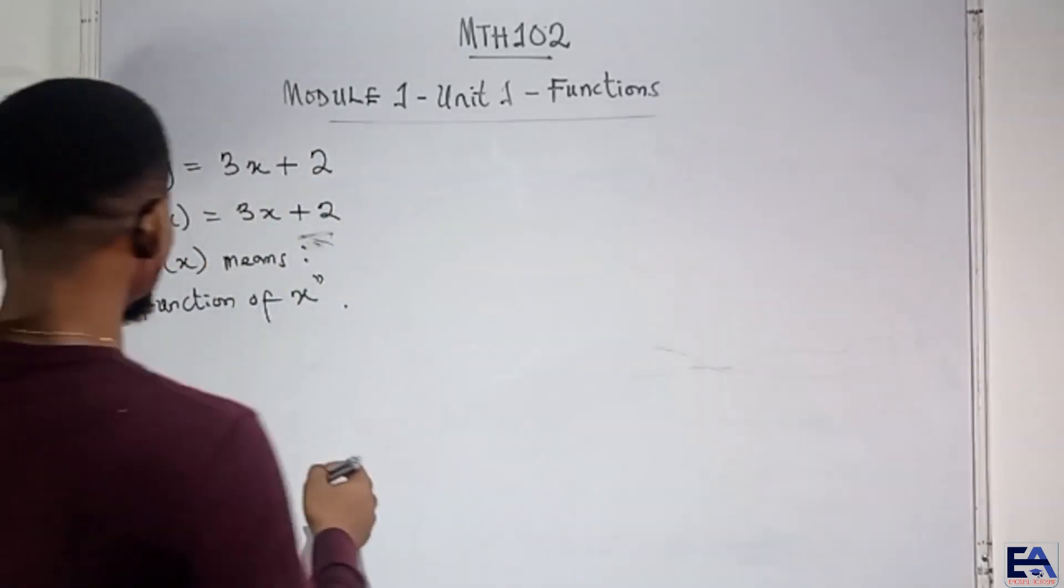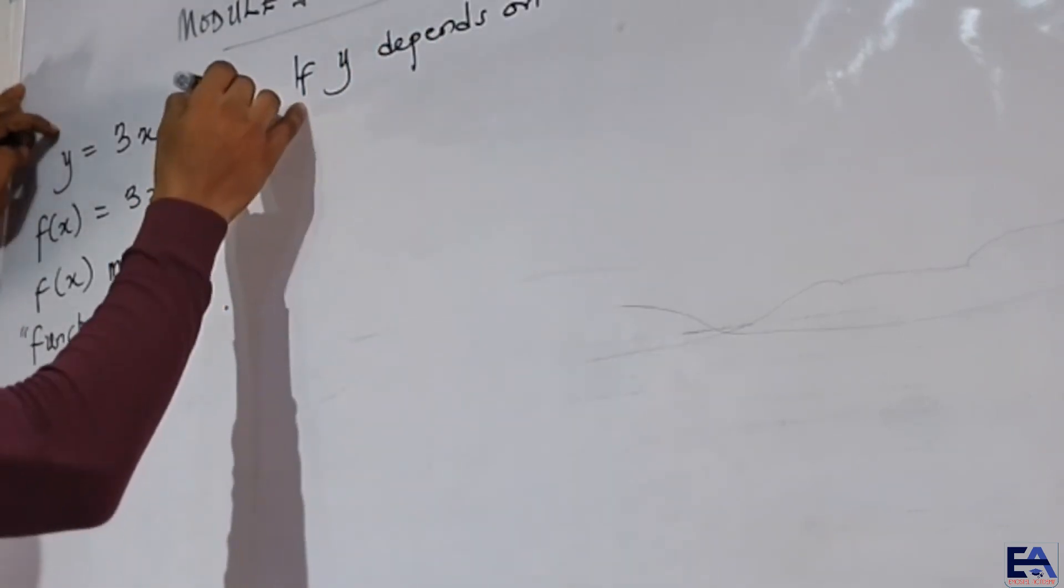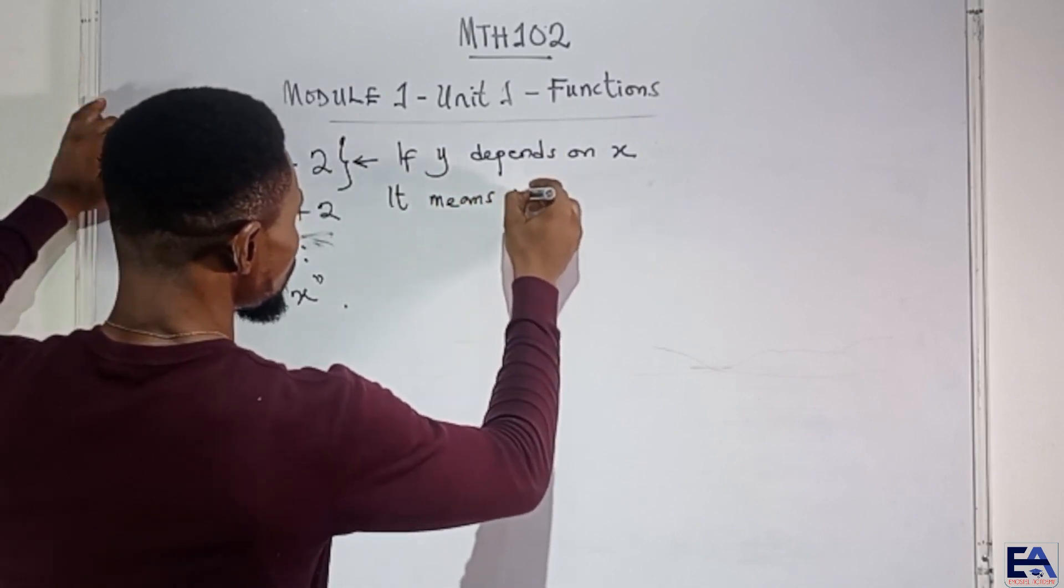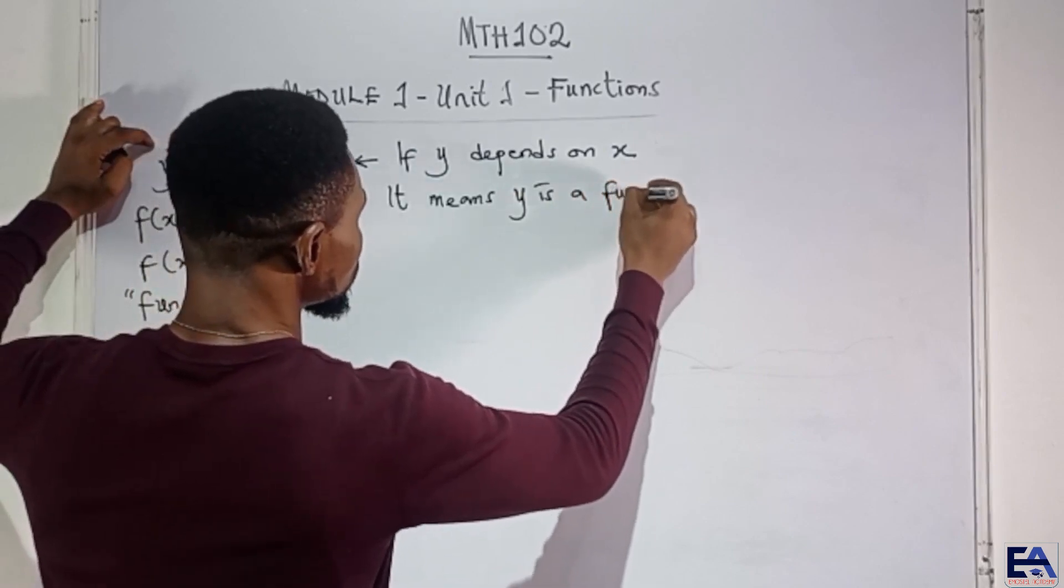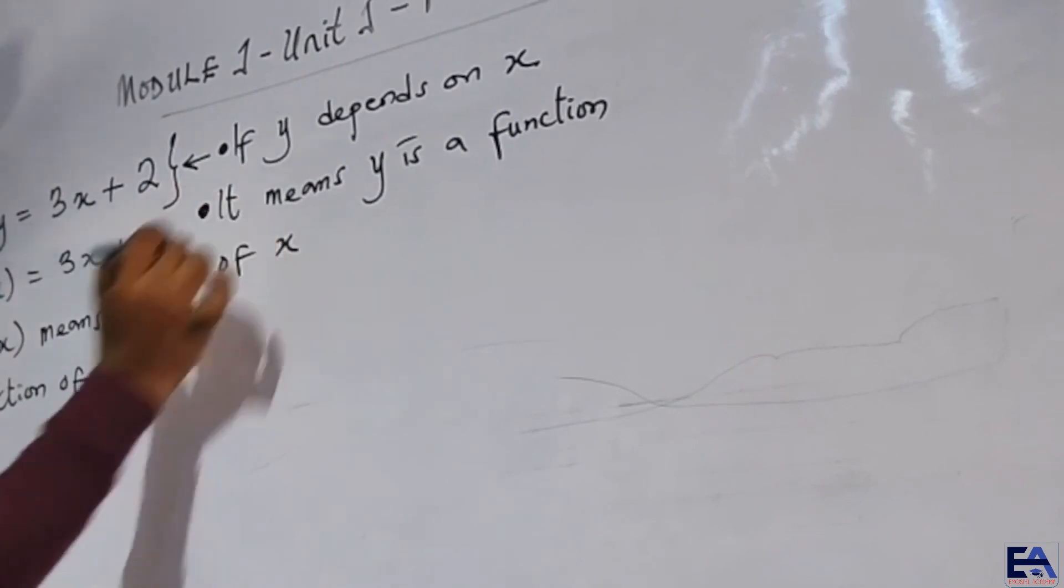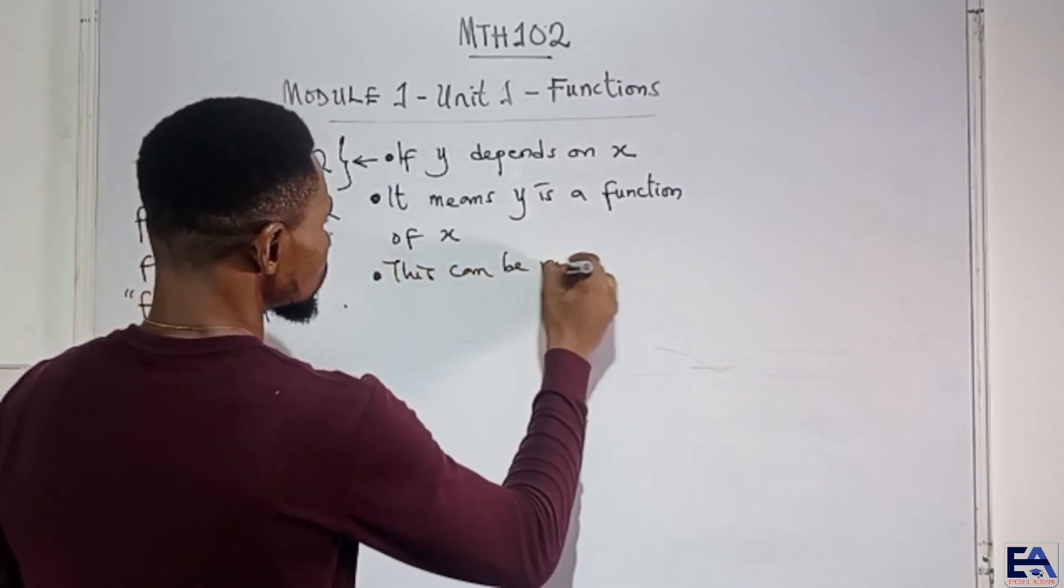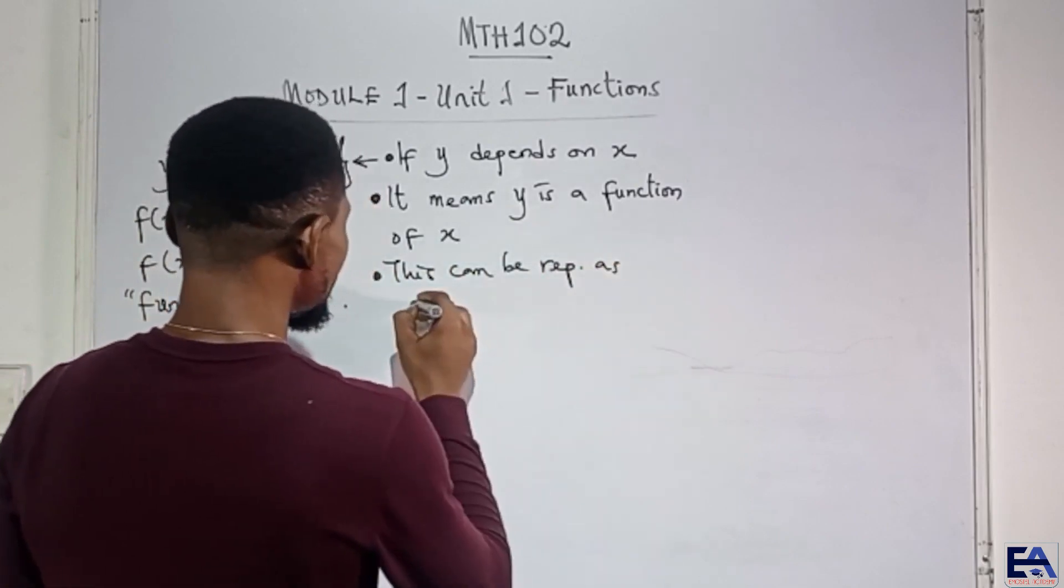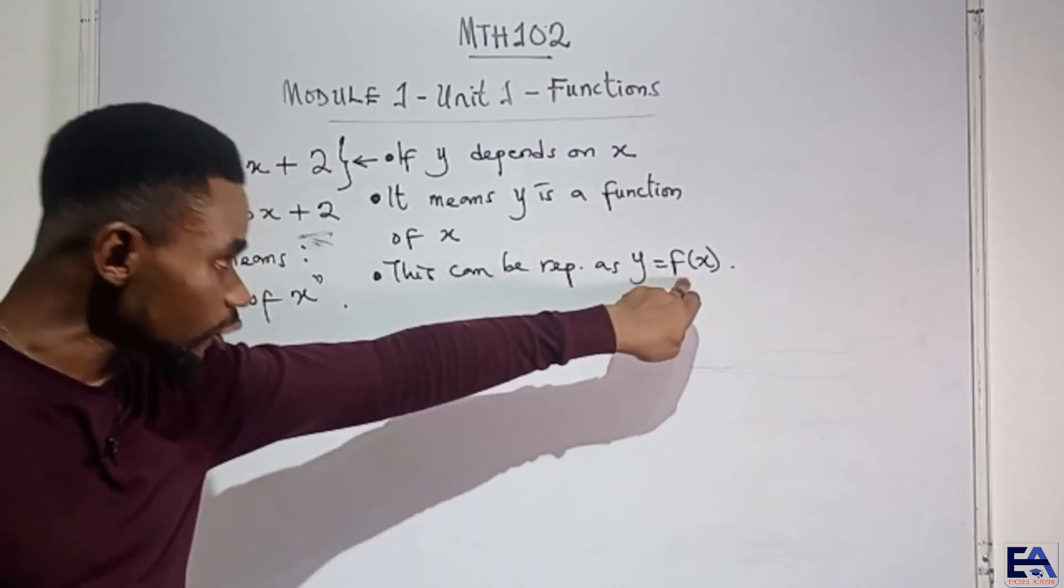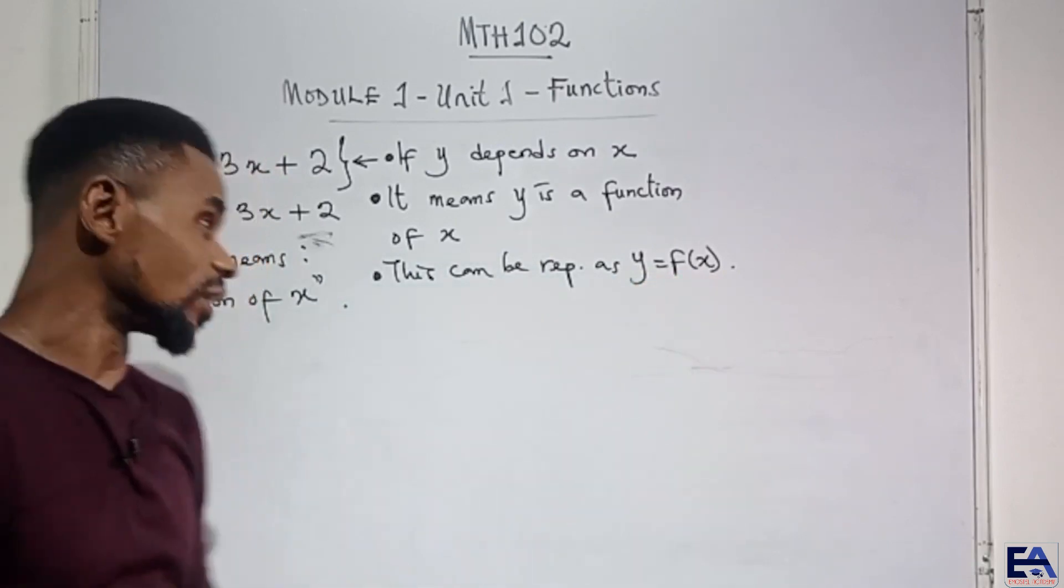Now, when we say if y depends on x, it simply means it can be said that y is a function of x. So, this can be represented as y equals f of x. Y is a function of x. It's not as if f is multiplying x. Nothing is multiplying anything. It's just that y is a function of x, and that's just how it is.